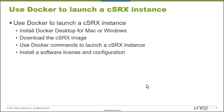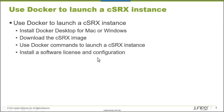To deploy a CSRx instance, I have a Windows laptop with Docker Desktop for Windows installed. There's also a version for Mac and a Linux version. I downloaded the CSRx image from the Juniper Support Downloads website. We will use Docker commands to create the necessary networks and launch the CSRx instance. Once the CSRx instance is launched, to get all the functionality out of it, you're going to need a software license and then apply some configuration.